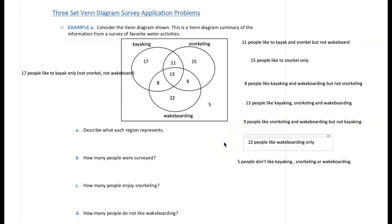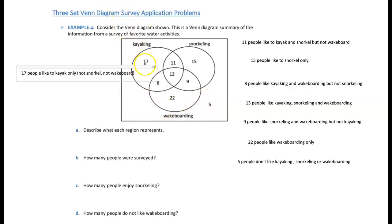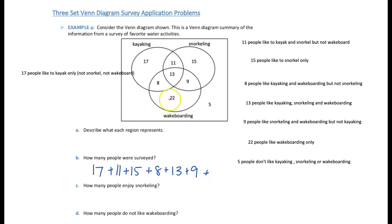Part B: How many people were surveyed? Similar to before, we add up all the numbers representing people: 17 + 11 + 15 + 8 + 13 + 9 + 22 + 5. There are eight different regions, so there should be eight numbers added together. The total is 100 people surveyed.